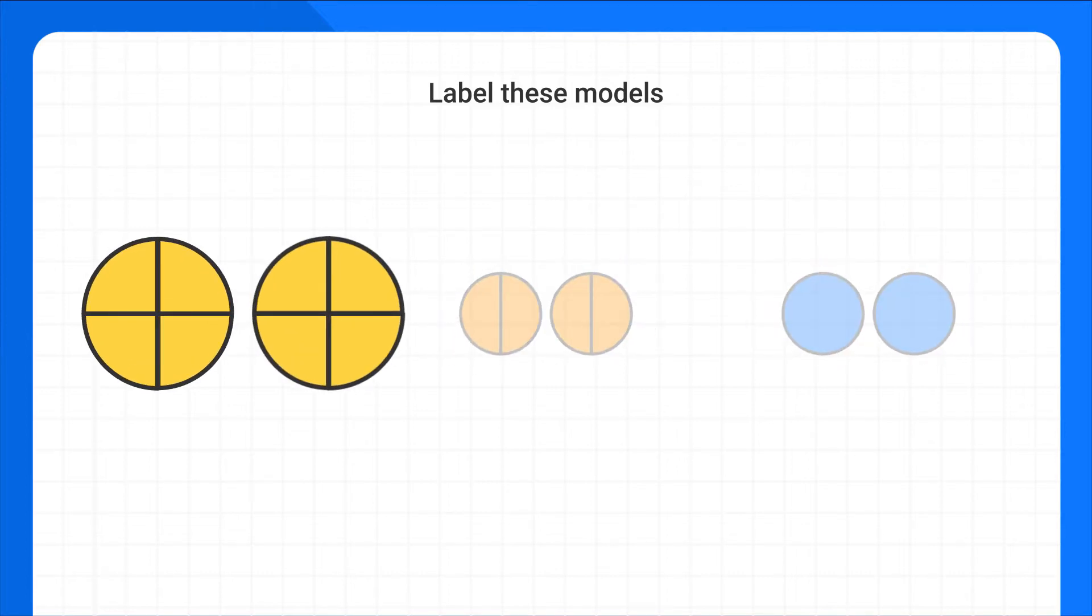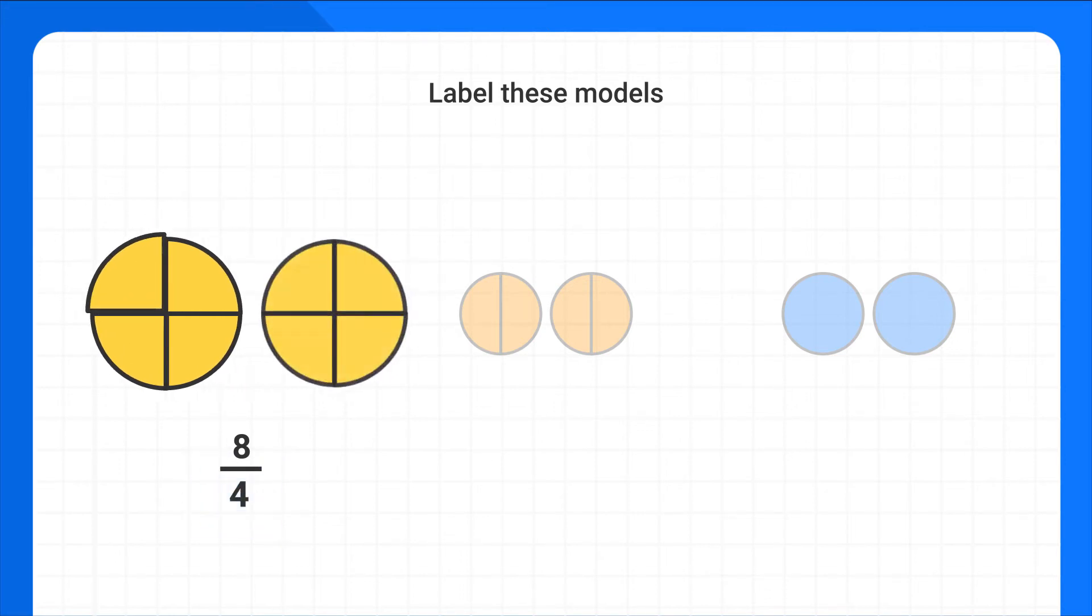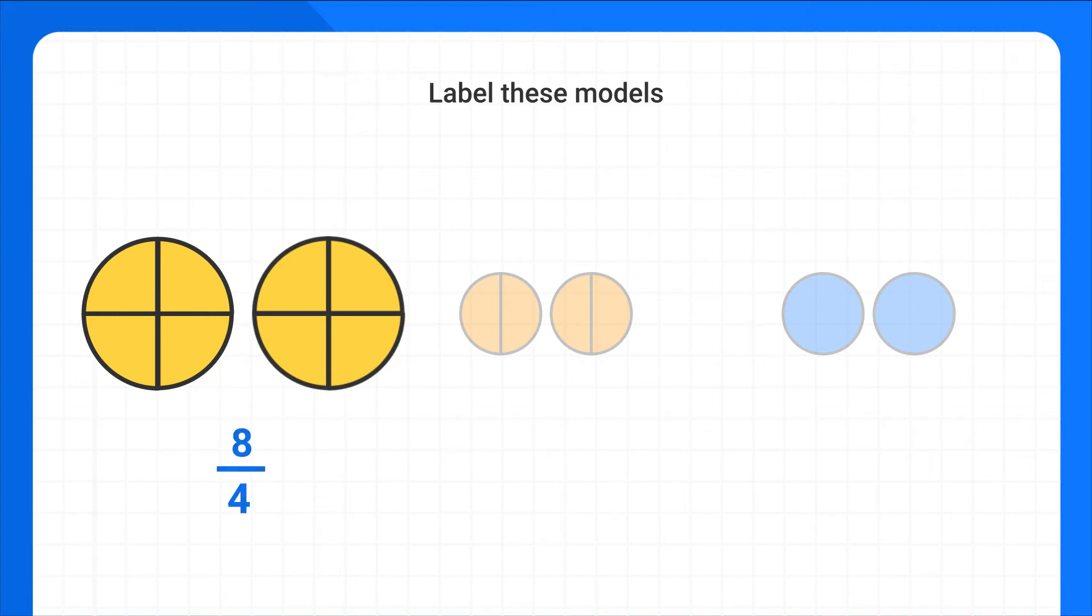In this first group, we see there's a total of 1, 2, 3, 4, 5, 6, 7, 8 shaded pieces, so the numerator of the fraction will be 8. Then we see each piece is 1 fourth of a circle, so the denominator here is 4. We would label this model as 8 fourths.